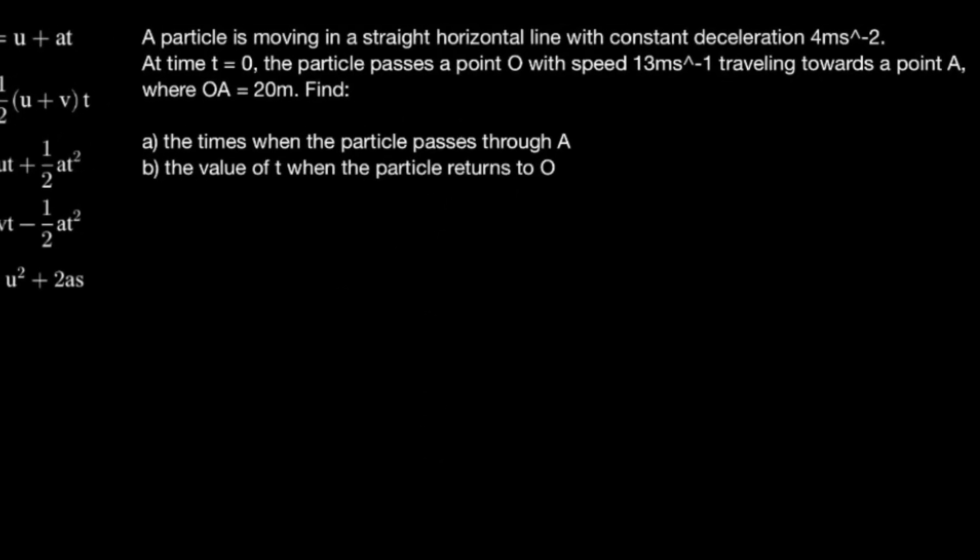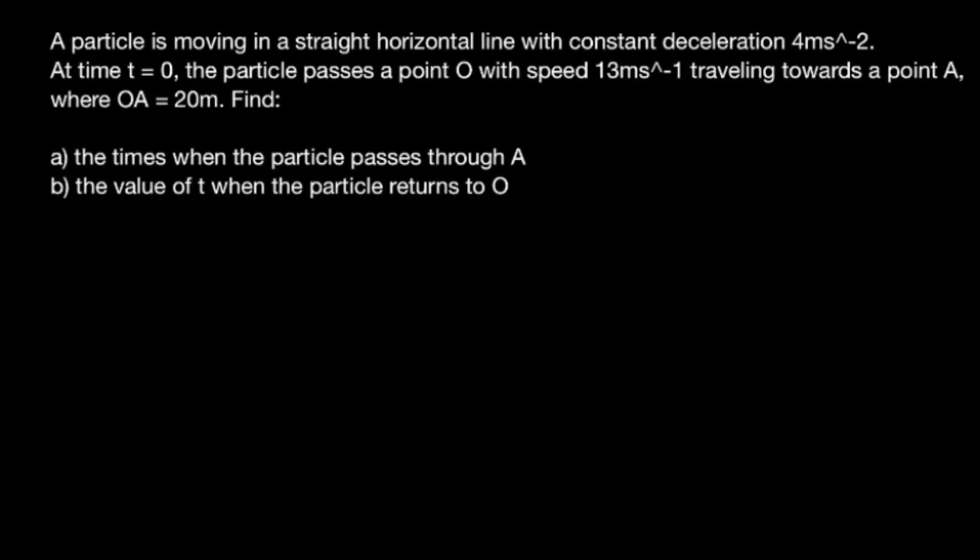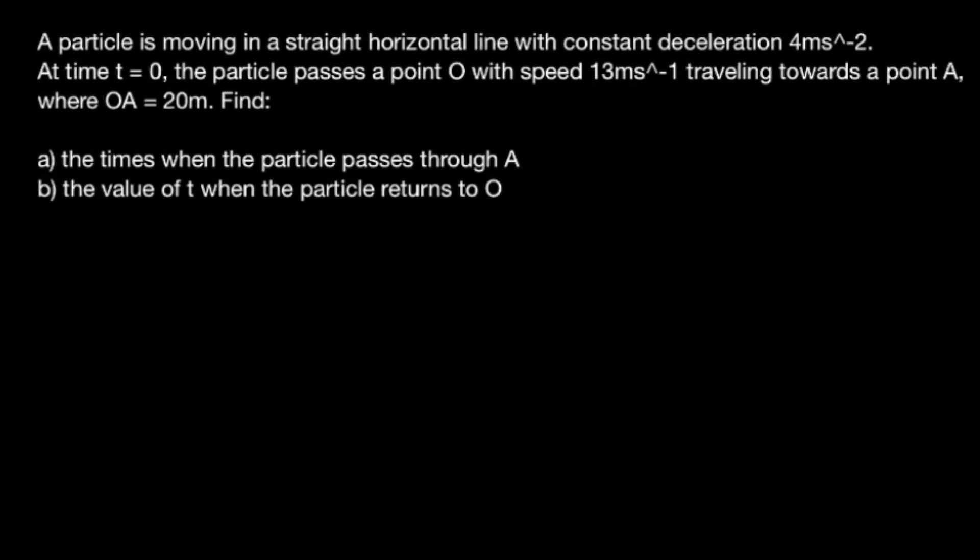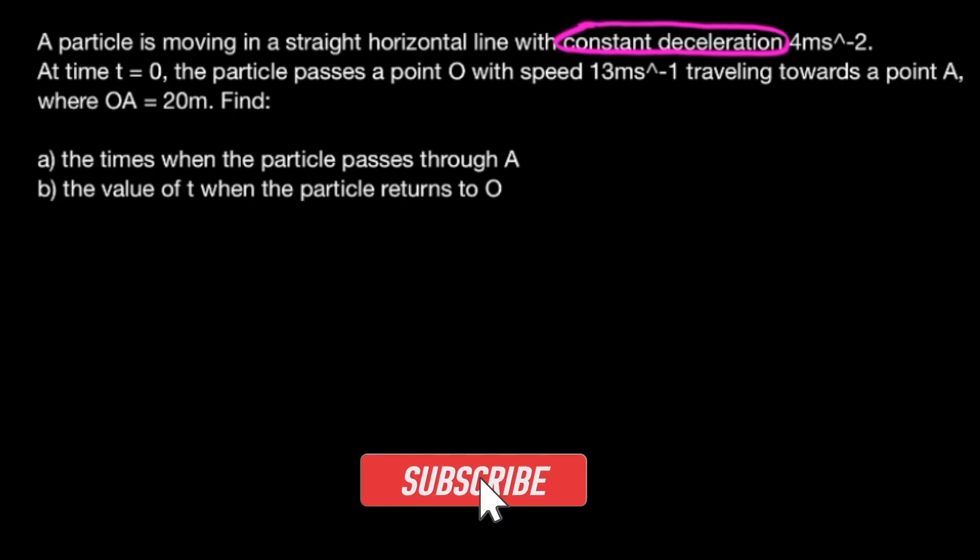And with that said, let's dive into our first example. A particle is moving in a straight horizontal line with constant deceleration 4 meters per second squared. At time t equals 0, the particle passes through a point O with speed 13 meters per second, traveling towards a point A where OA is 20 meters.